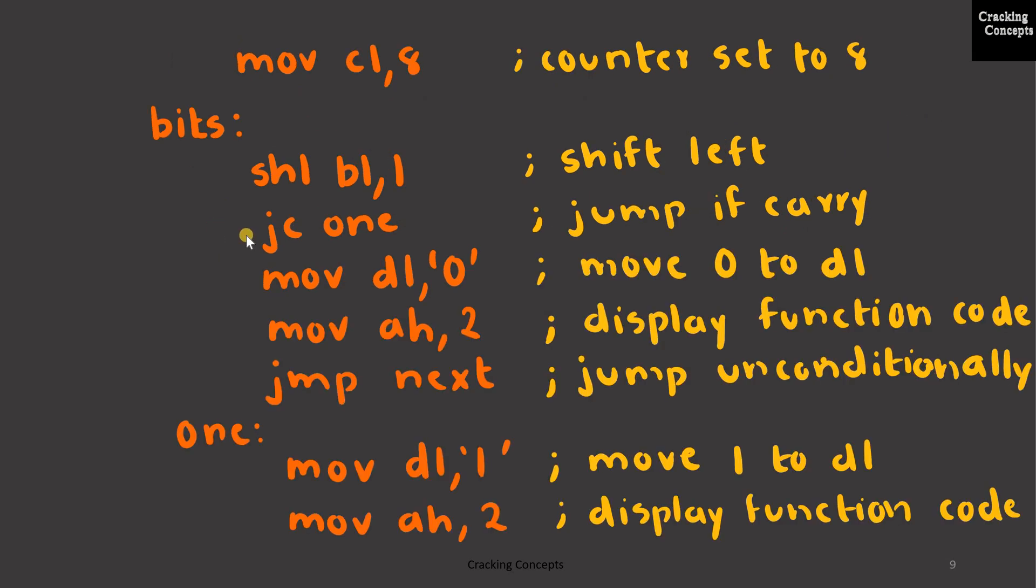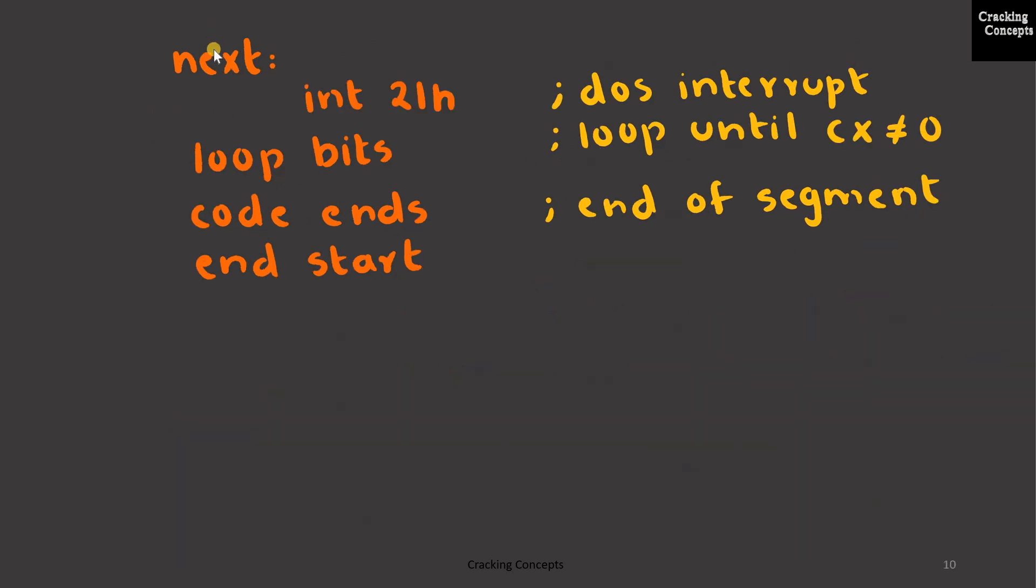If the case is such that the carry flag is not set, that is the value is 0, we will do the same: load the value 0 to DL, function code 2 to AH, then we perform a jump to the next label where we will call the DOS interrupt.